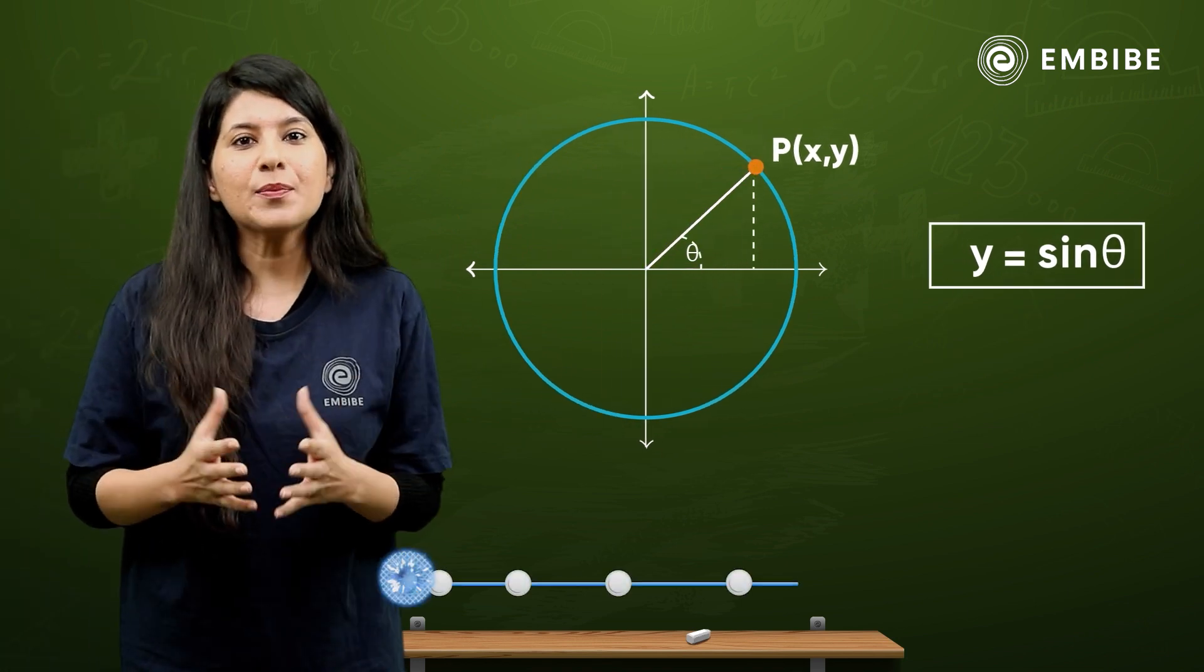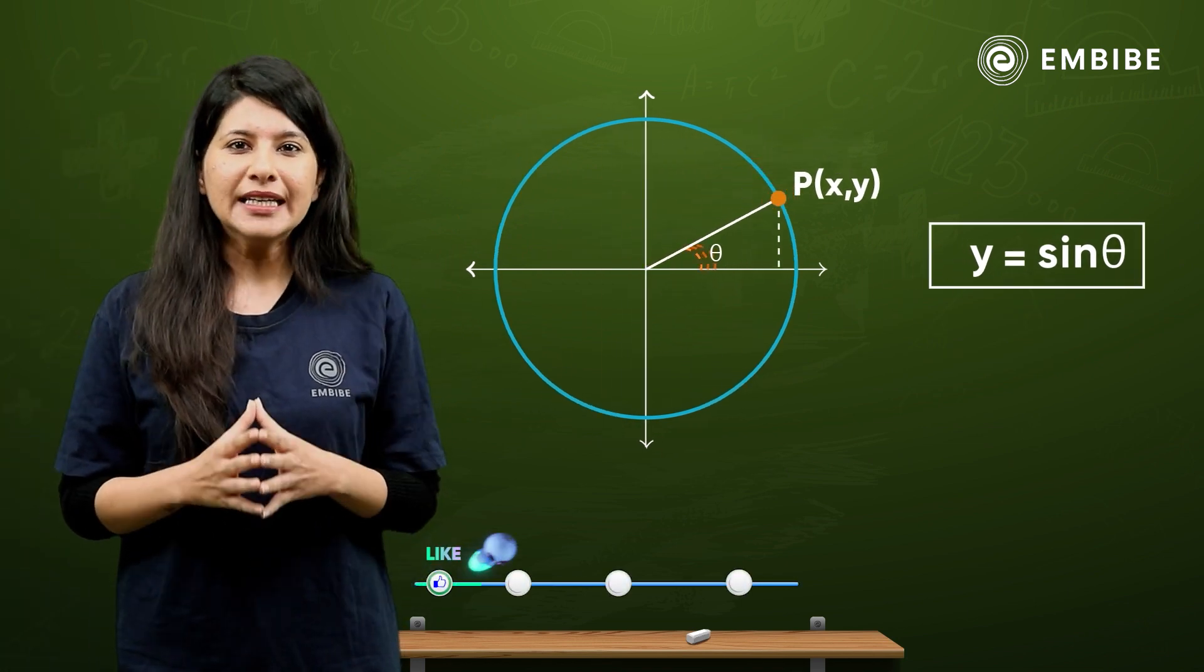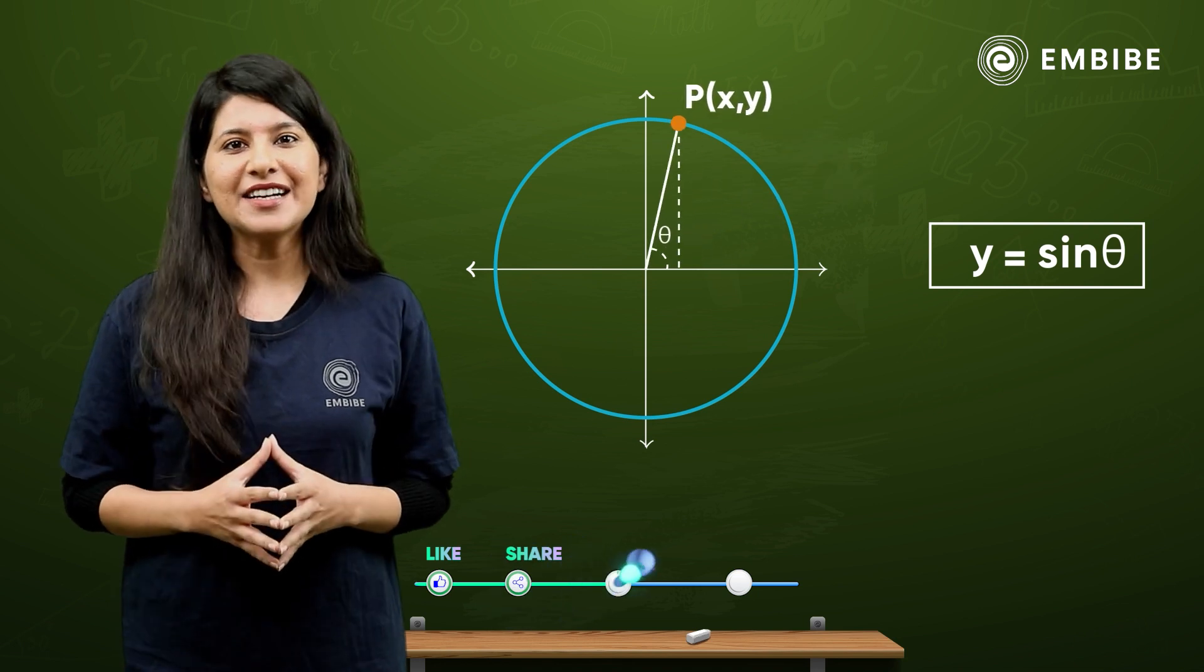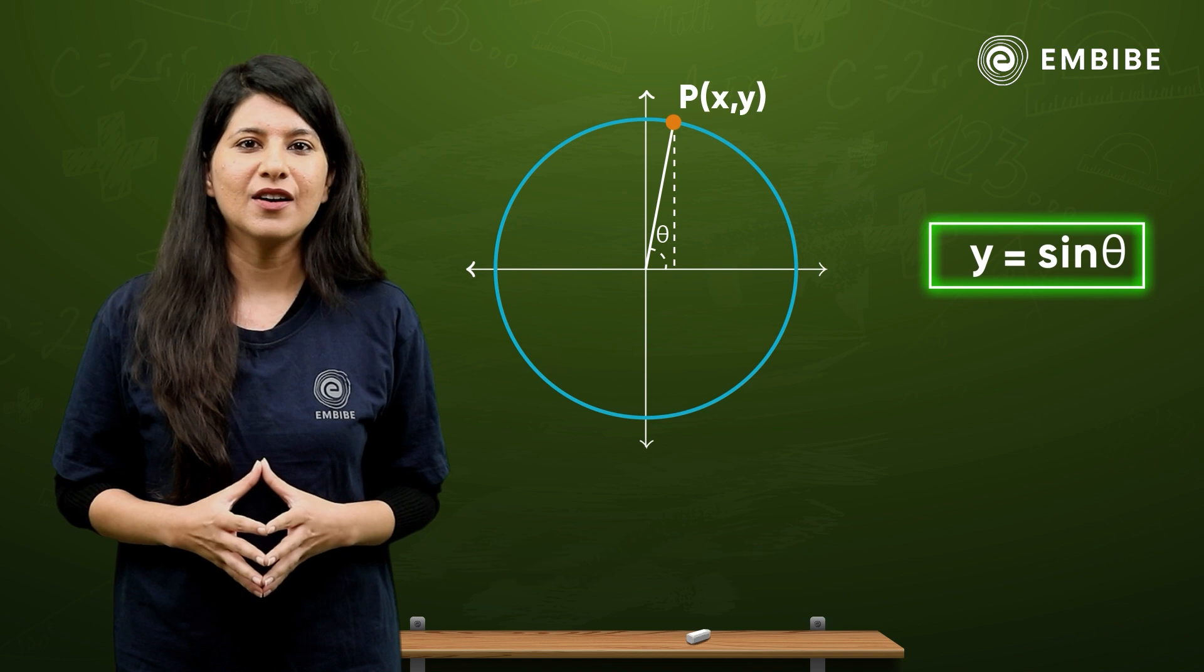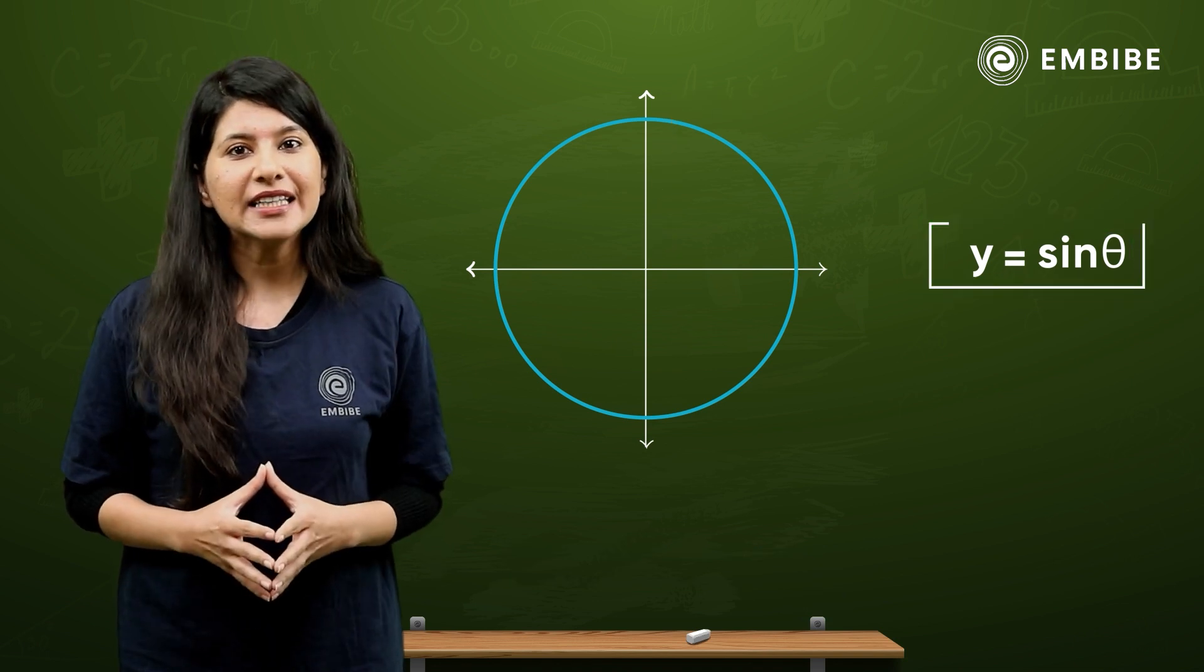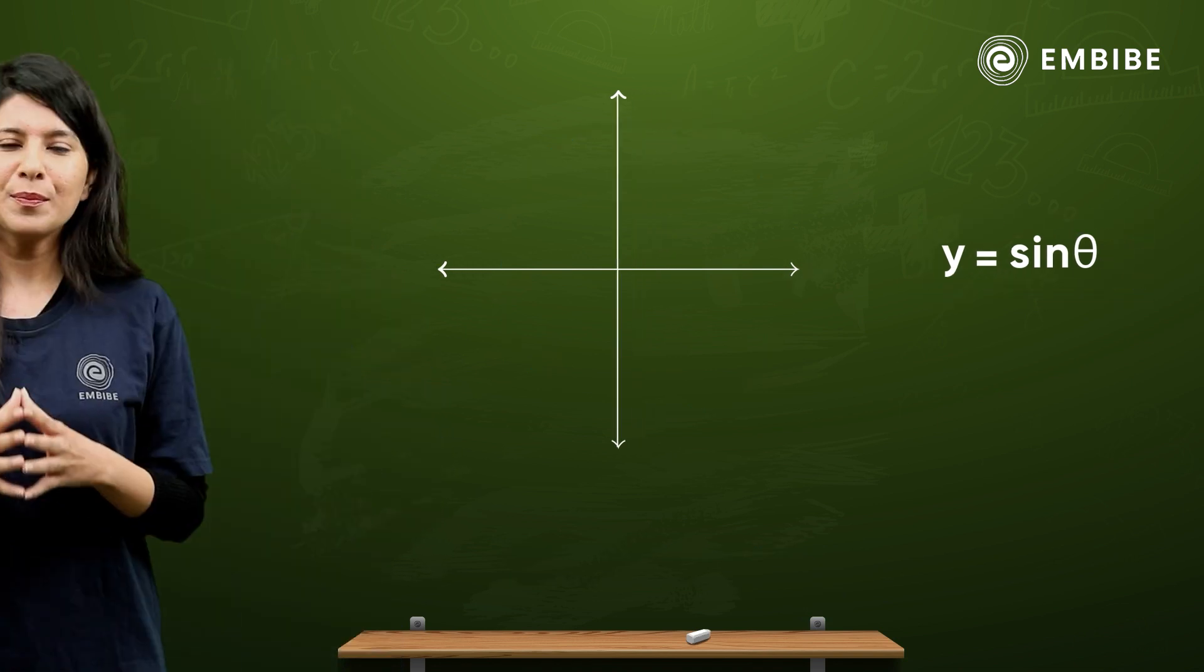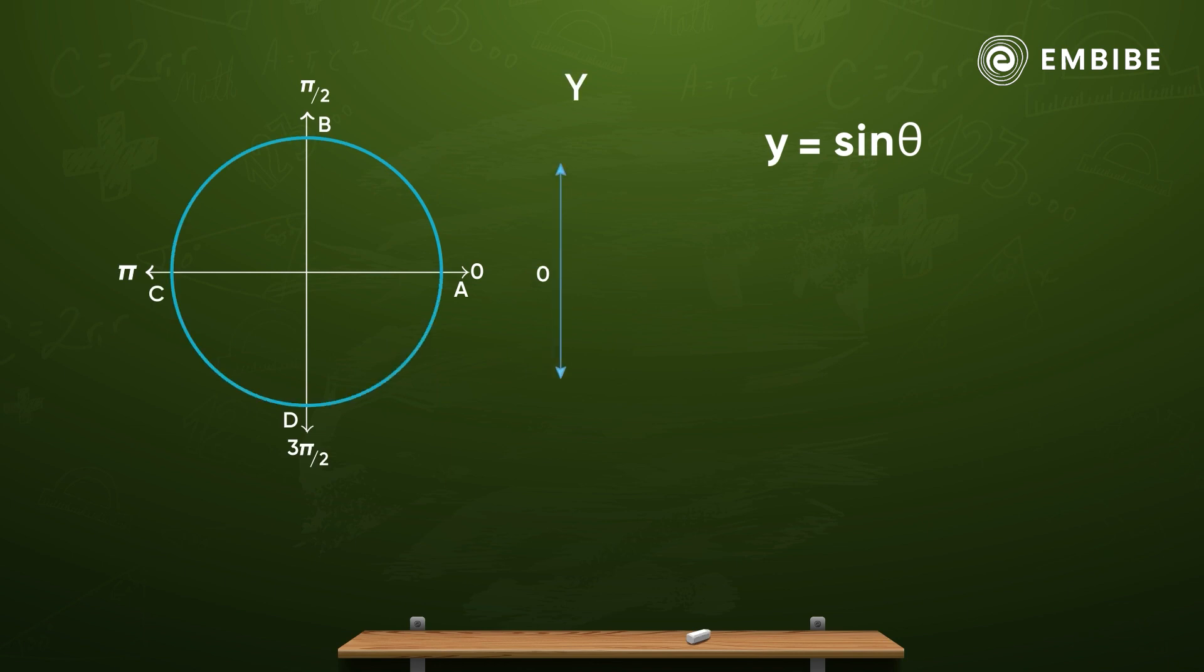Now, as I can change P's position, the theta will also be changed. I will get a different value of the y coordinate. And I will plot y equals sine theta. Let's have the theta on the x-axis and the y-axis will be sine theta.